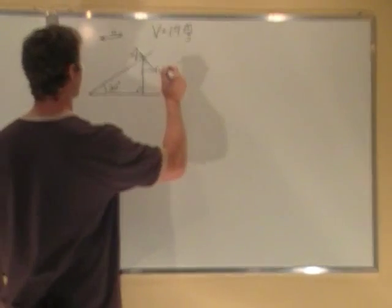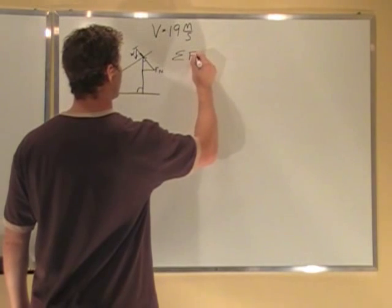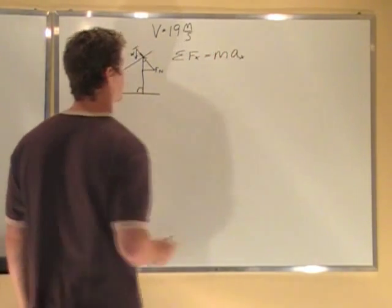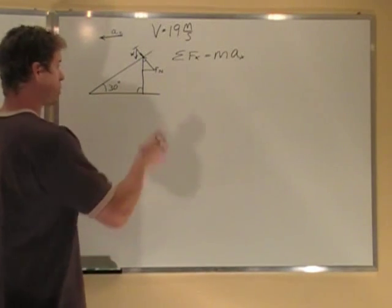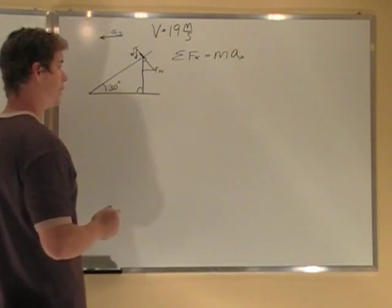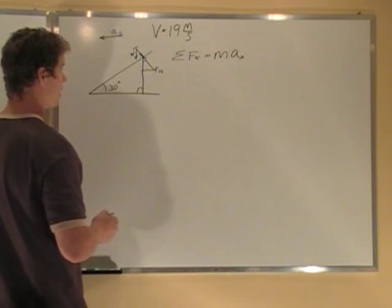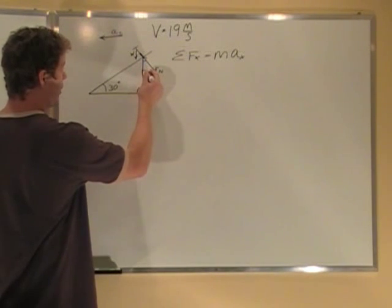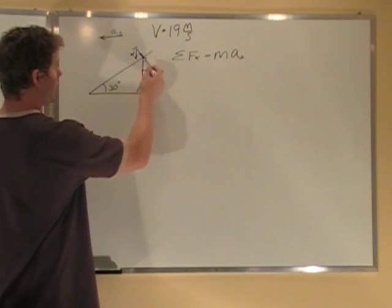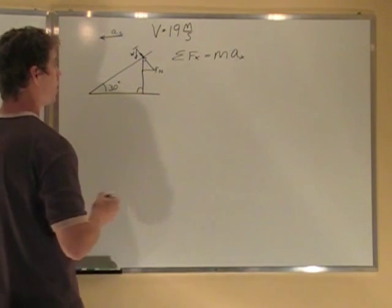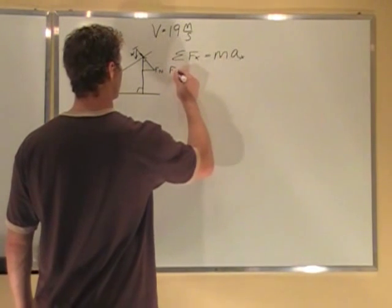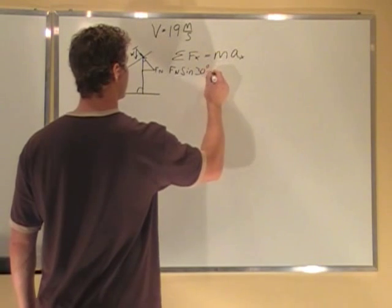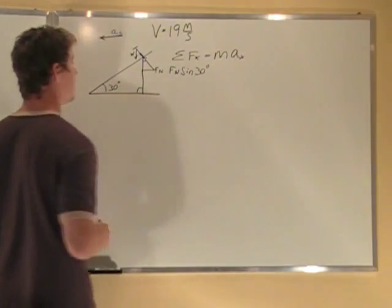So let's sum the forces in the x direction, which equals m times acceleration in the x direction. The forces in the x direction: W is only in the y direction. Normal force in the x direction: sine theta is going to be opposite, which is our x direction, over hypotenuse, which is our normal force. So Fn sine 30 degrees is our force in the x direction.